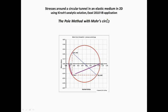The pole method with Mohr's circle is a simple but efficient graphical procedure to find the stresses acting at arbitrarily oriented planes. Mohr's circle is drawn in a coordinate system with the normal stress as abscissa and the shear stress as ordinate. The coordinates of Mohr's circle points represent the normal stress sigma and the shear stress tau acting at planes with different orientations at a point P in the stress field around the tunnel.